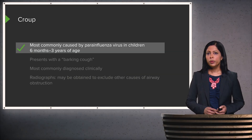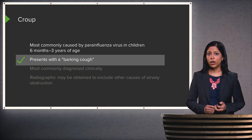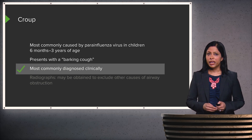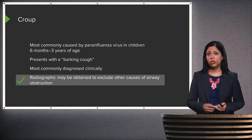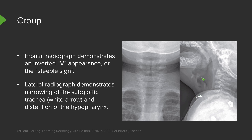Croup is most commonly caused by parainfluenza virus and occurs between the ages of six months and three years. The most common clinical symptom is a barking cough, which, once you've heard it, is very easy to recognize again. These are usually diagnosed clinically because of the classic barking cough; however, you can obtain a radiograph to exclude other causes of airway obstruction. On the frontal view, the airway has an upside-down V appearance, also called the steeple sign. On the lateral radiograph, you have narrowing of the subglottic trachea outlined by the arrow, and distention of the hypopharynx — because of narrowing distally, there's dilatation more anteriorly.